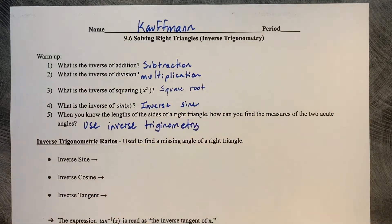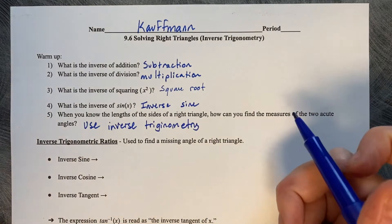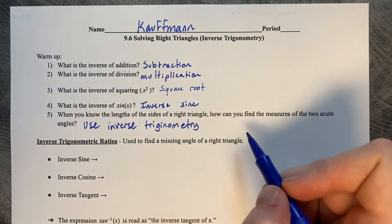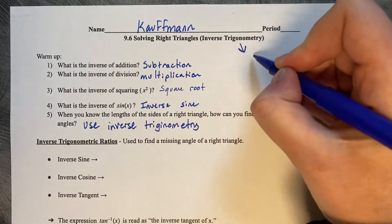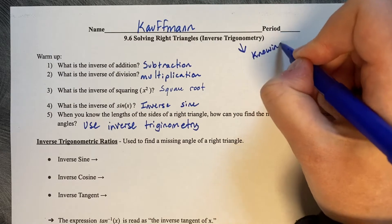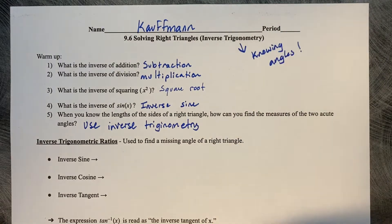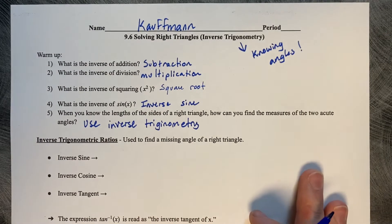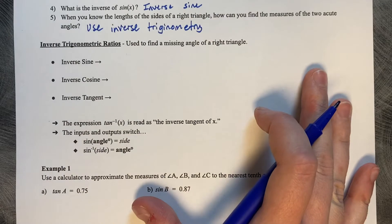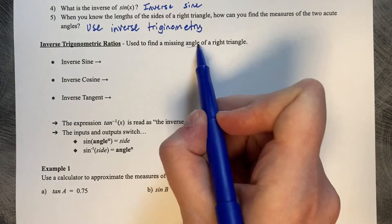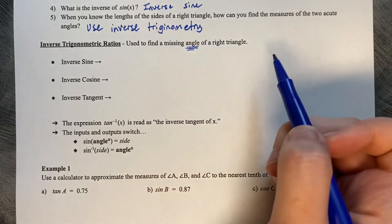Regular trigonometry that we've been using thus far results in knowing side lengths. Inverse trigonometry is going to result in knowing angles. This is helpful if you would like to know an angle of a right triangle. Inverse trigonometry is used to find a missing angle of a right triangle — angle is the key here.